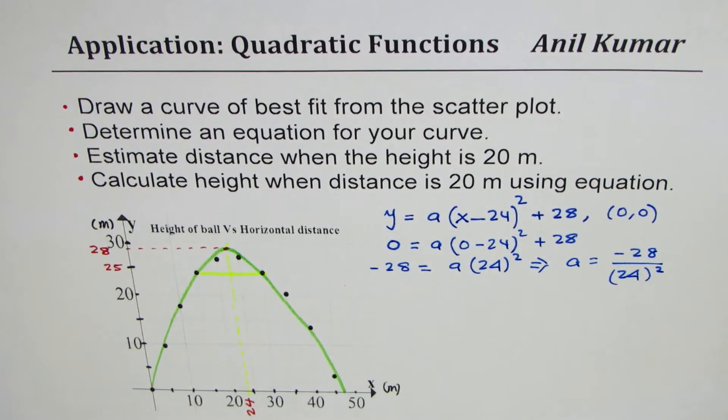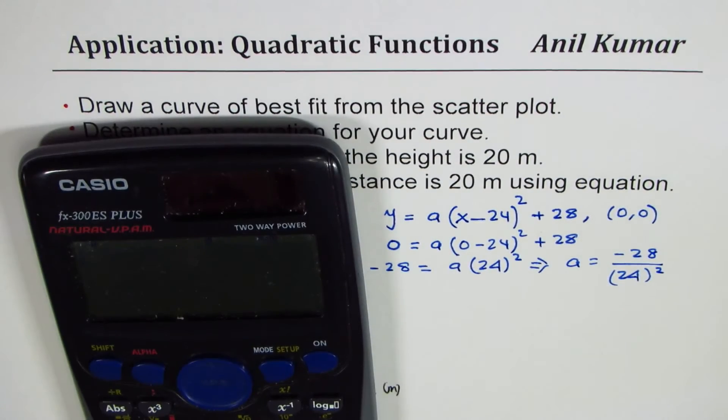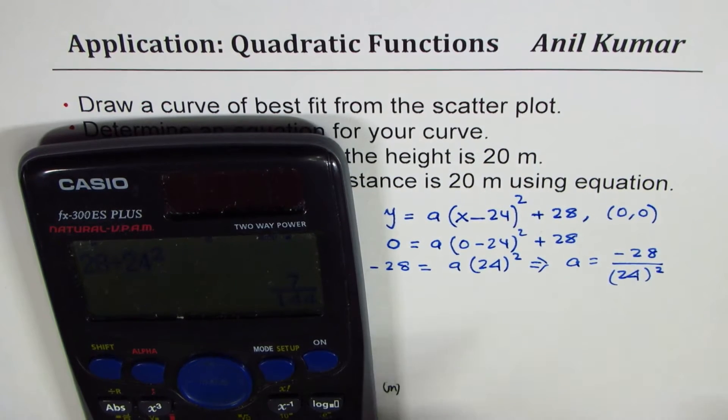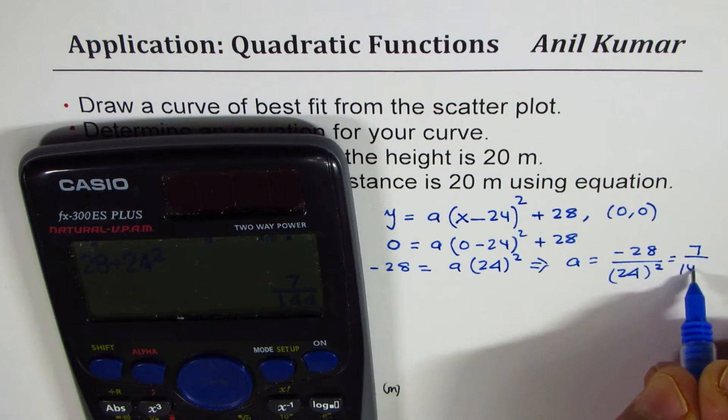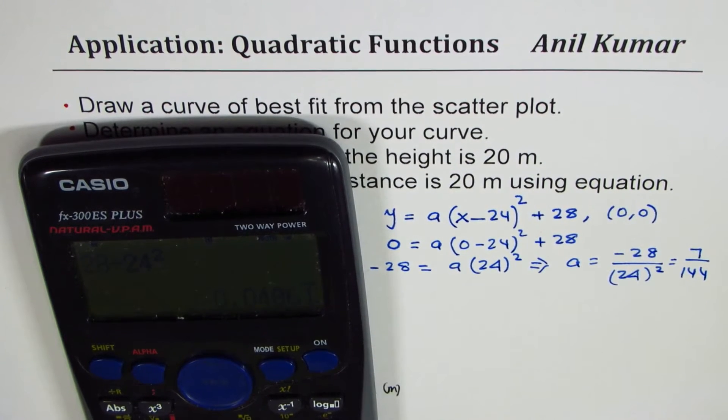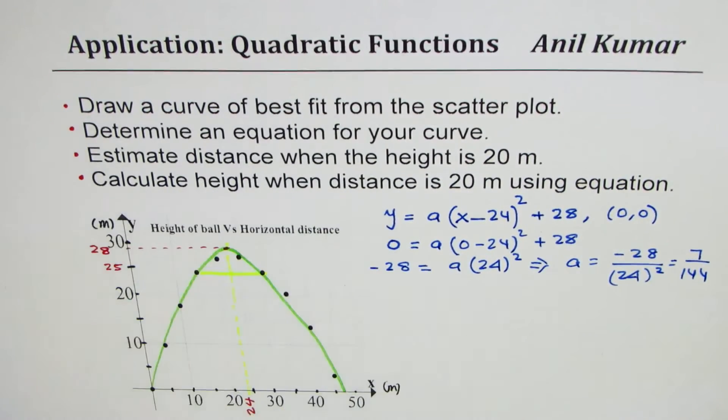Let's use the calculator. We could actually write in fractions also. We'll do 28 divided by 24 square and that gives you 7 over 144. So we'll use fractions itself: 7/144. In decimals however it could be written as 0.05.